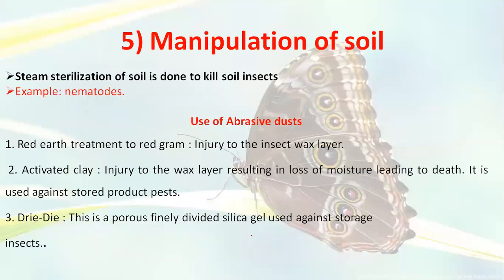The next practice is manipulation of soil. Steam sterilization is done in the soil to destroy different larvae and insects hidden in the soil. For example, nematode infestations that occur in crops like pomegranate are destroyed by steam sterilization.